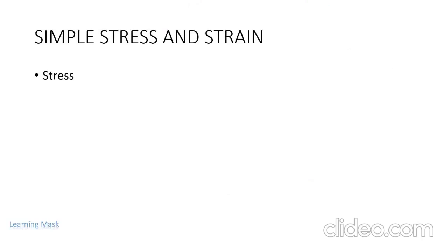Here we will talk about simple stress and strain. First, let's define what stress means. Suppose we have a material and it is subjected to a force F — this is our external force. When an external force acts on this object, a resisting force is set up within the component. These are resisting forces which act on this side.